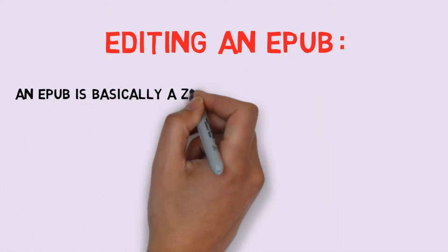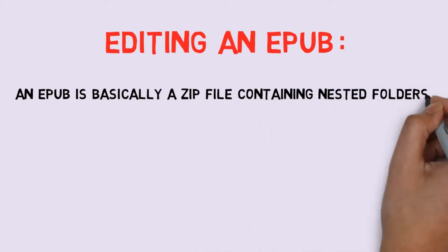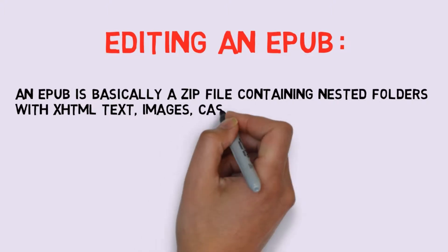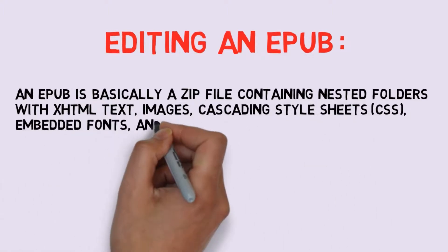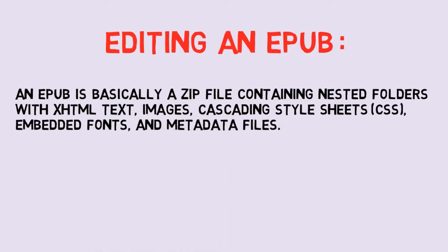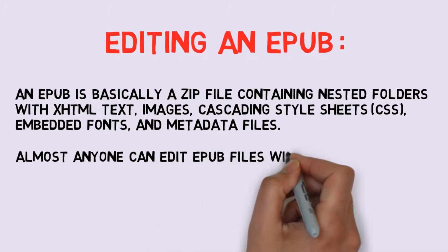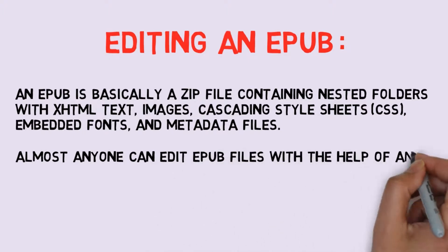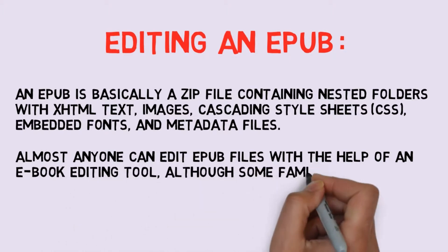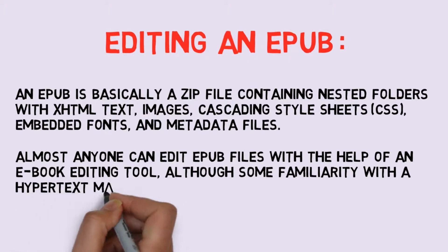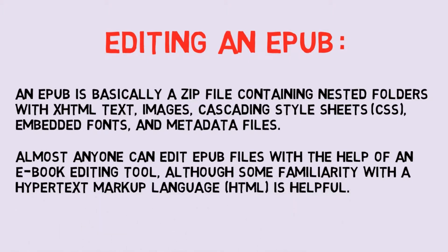An EPUB is basically a zip file containing nested folders with XHTML text, images, cascading style sheets (CSS), embedded fonts, and metadata files. Almost anyone can edit EPUB files with the help of an e-books editing tool, although some familiarity with HTML is helpful.